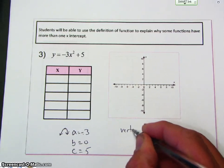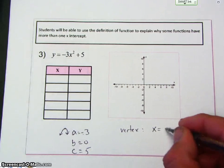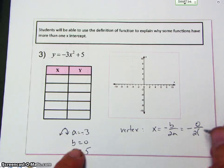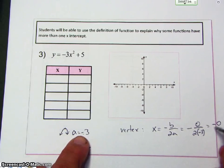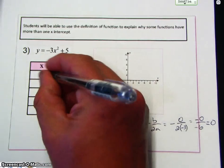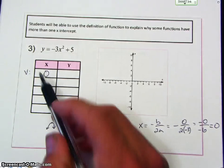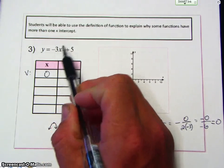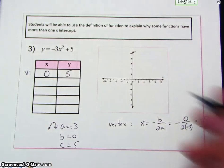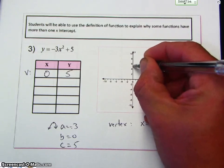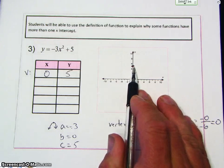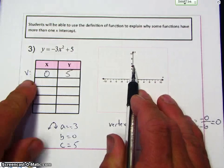So to find the vertex, I use x equals negative b over 2a. So negative b will be 0 over 2 times a. So it will be negative 0 over negative 6, which is 0. So my x coordinate of the vertex is 0. So I plug 0 back in for x. So 0 squared is 0 times negative 3 is 0 plus 5 is 5. So my vertex is at 0, 5. You notice that's also the same as my y intercept.